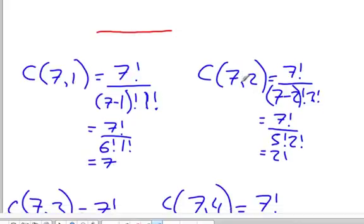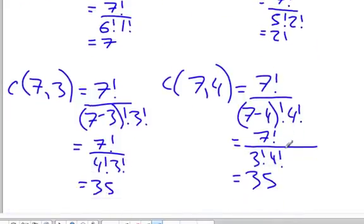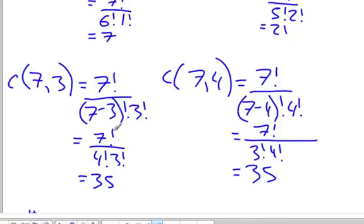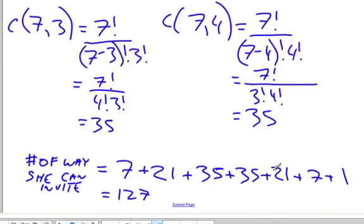If she's going to invite two friends over, it's going to be the combination of seven choose two, which is 21. The combination of seven choose three is 35. Combination of seven choose four is 35.